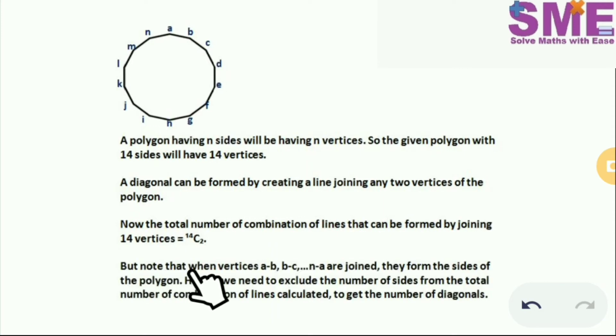But here we have to note that when vertices ab, bc, cd, de and so on are joined, they form the sides of the polygon.